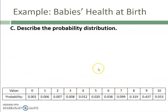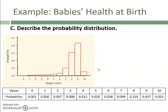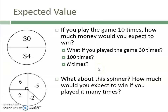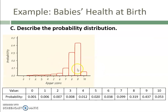Now, if I wanted to describe the probability distribution, I have the graph here. Going through SOCS, this is clearly skewed to the left — that's where the tail is going. But I would need the center and the spread, the mean and standard deviation. We don't know how to calculate those yet, so we'll come back to this.